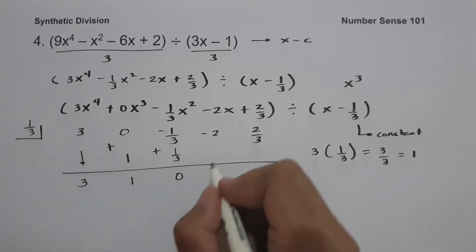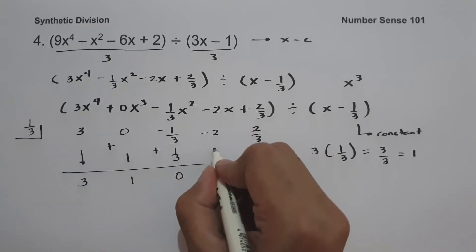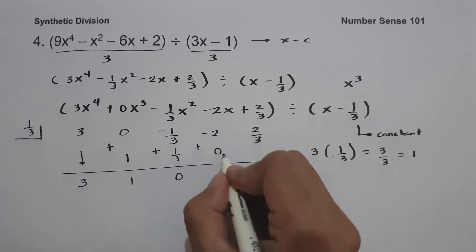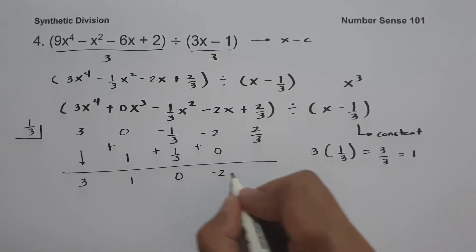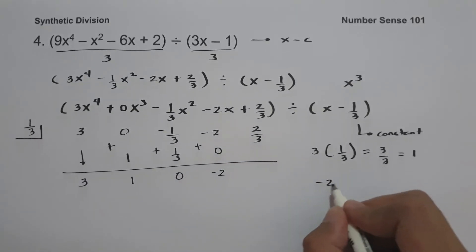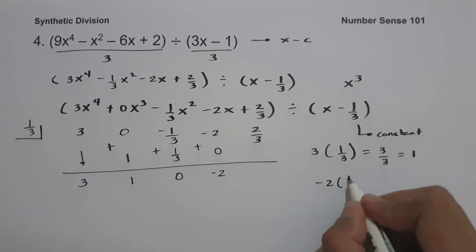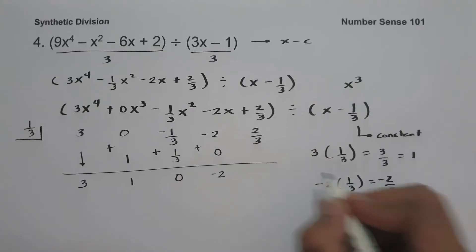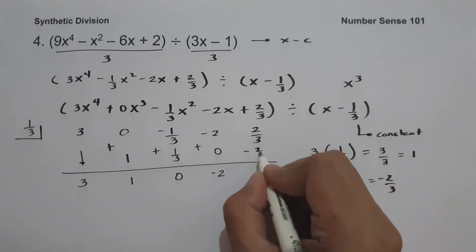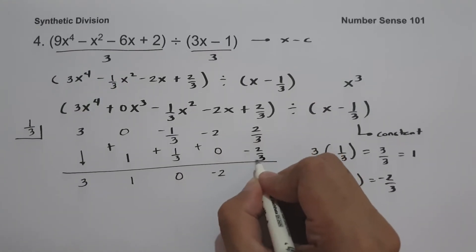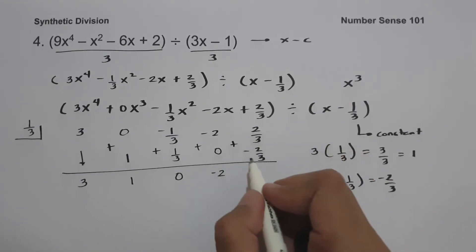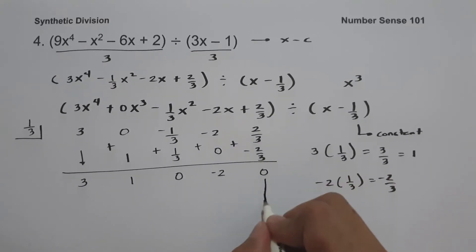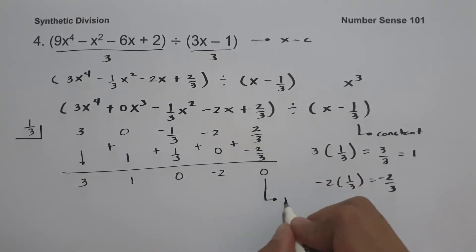Zero multiplied by one-third is 0. Negative 2 plus 0 is negative 2. Negative 2 times one-third is negative two-thirds. Two-thirds plus negative two-thirds is 0. So this will be our remainder.